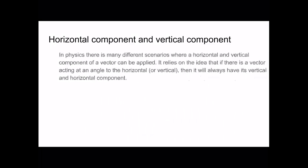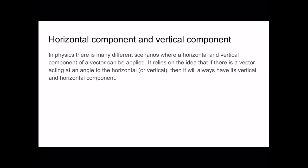Now we'll look at the horizontal and vertical components of velocity. In physics, if there is a vector acting at an angle to the horizontal or vertical, it will always have vertical and horizontal components. For example, a 100-newton force at an angle always has a horizontal and vertical component. By Pythagoras, the vertical component squared plus the horizontal component squared equals 100 squared in that specific scenario.